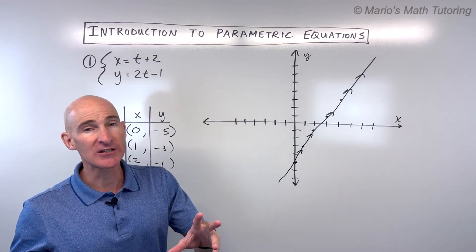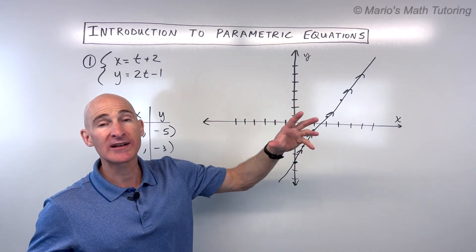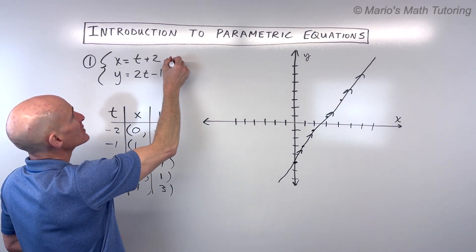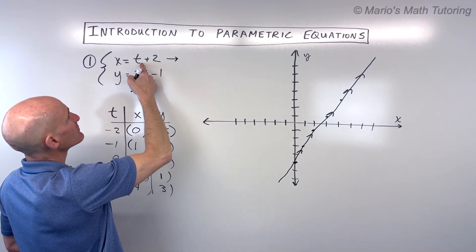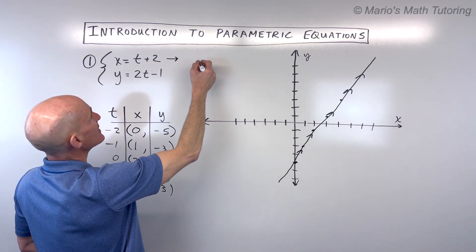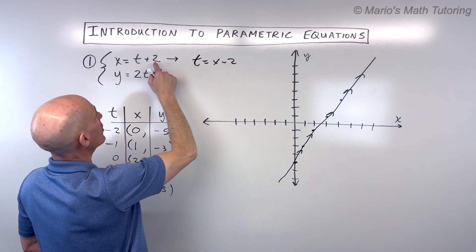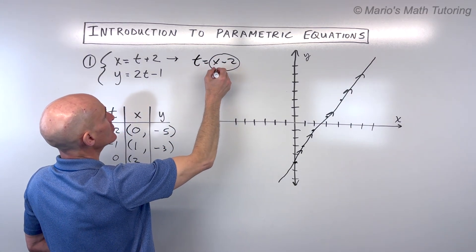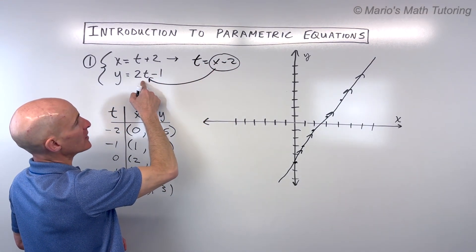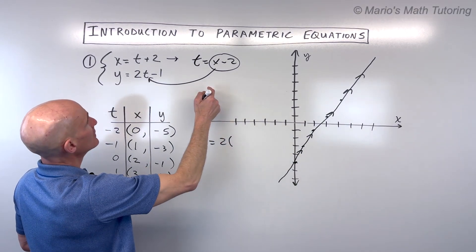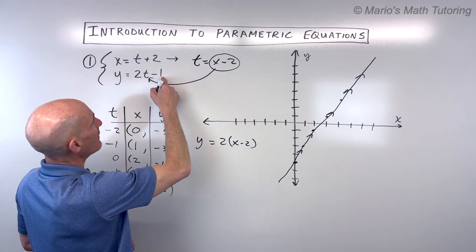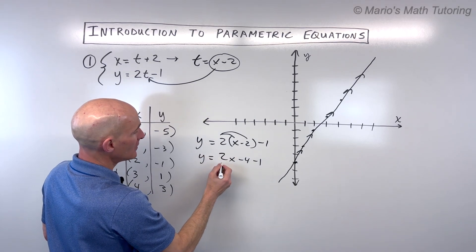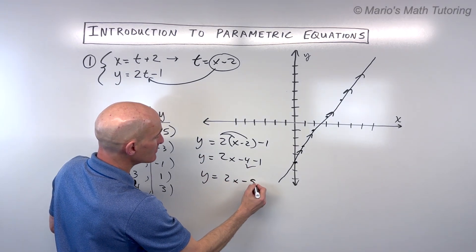The second thing is how do we write this in rectangular form or xy form, eliminating the parameter t? We can rearrange this equation by subtracting two from both sides, giving us t equals x minus two. Now we know what t is equal to, so let's put that in place of t in the second equation. That gives us y equals two times the quantity x minus two, minus one. Distributing gives us two x minus four minus one, and combining like terms gives us y equals two x minus five.